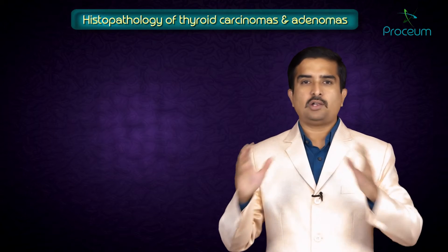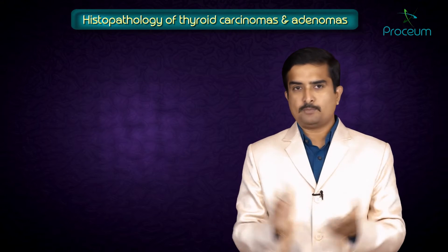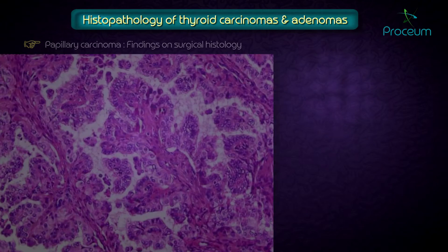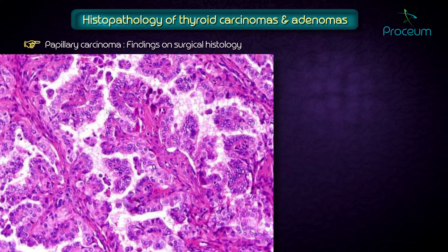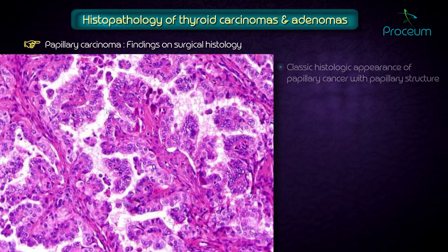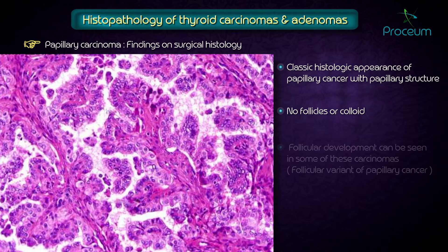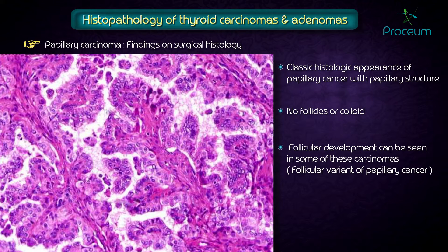Now let us discuss histopathology of various thyroid carcinomas and adenomas. The first image shows a surgical specimen with the classic histologic appearance of papillary cancer — a papillary structure with no follicles or colloid. A follicular development can be seen in some carcinomas if it is a follicular variant of papillary cancer, and diagnosis is made from cytologic features of the cells.